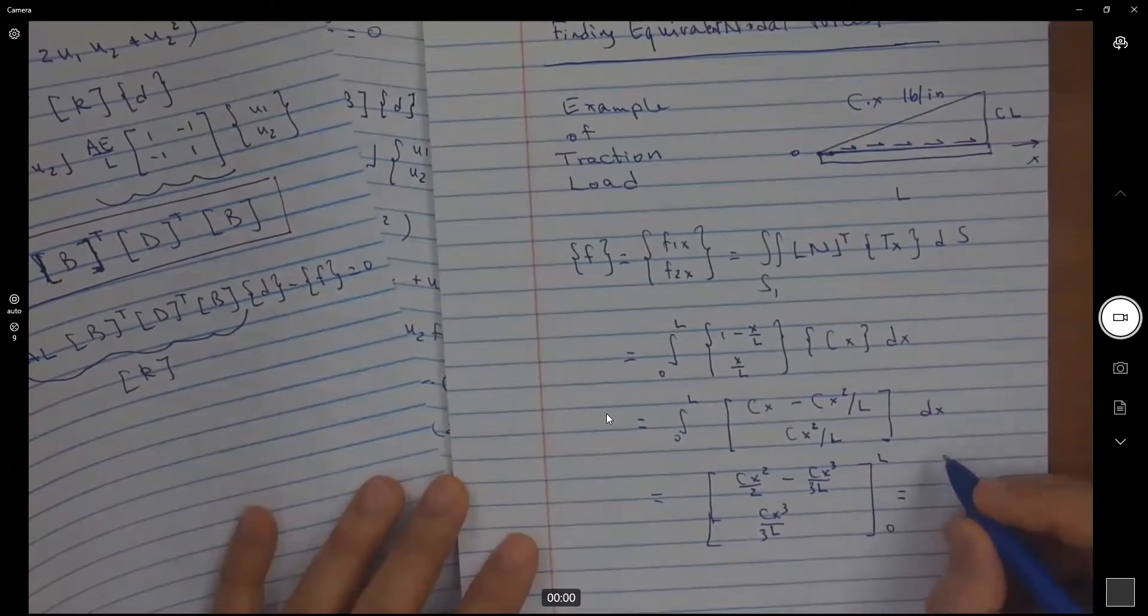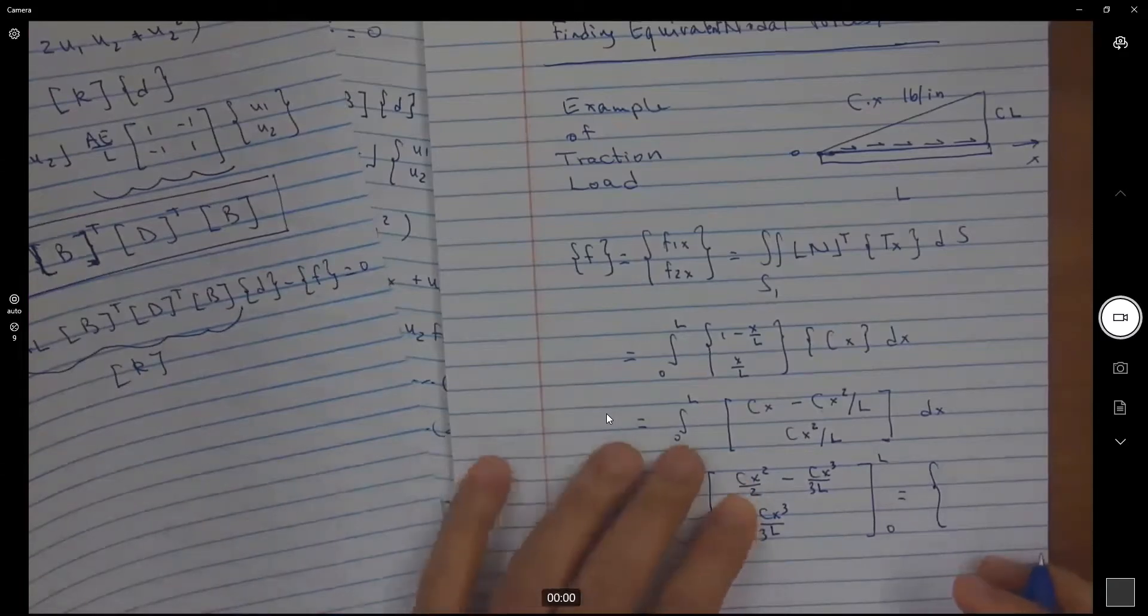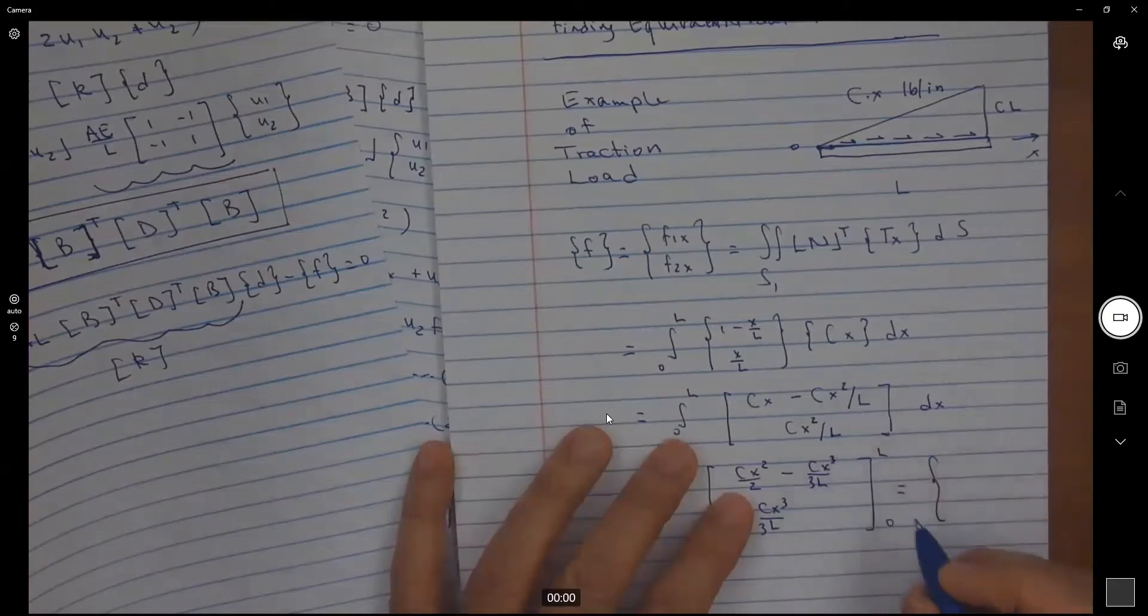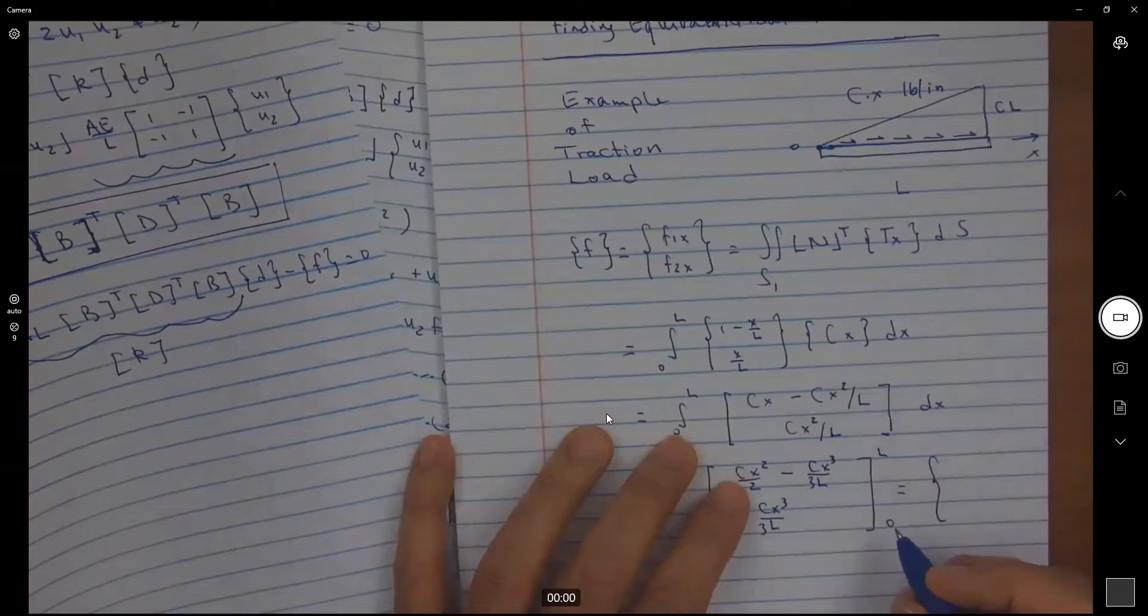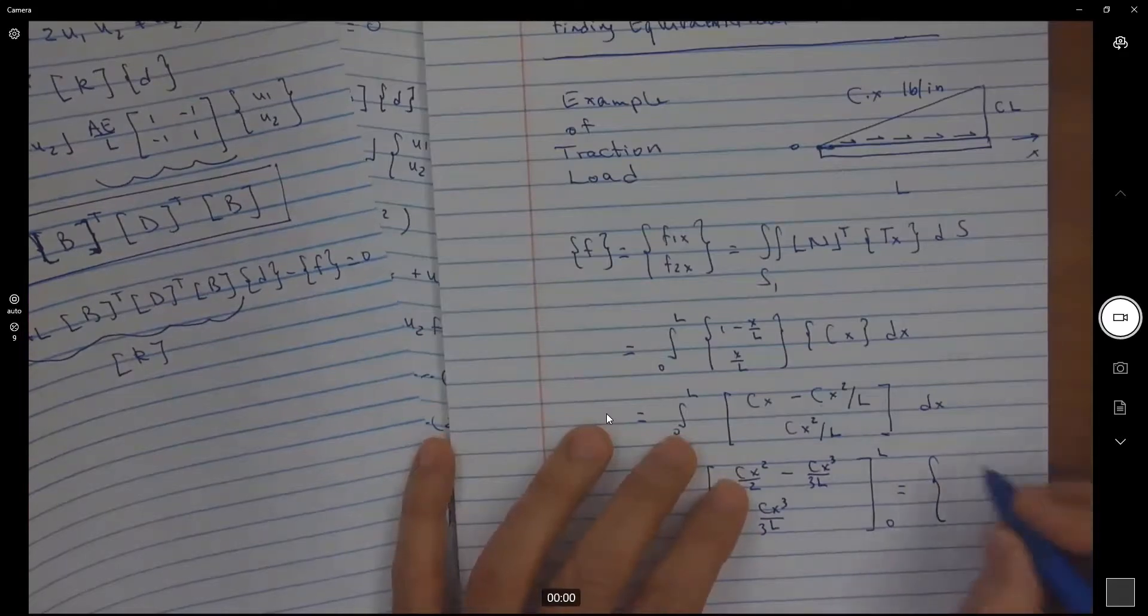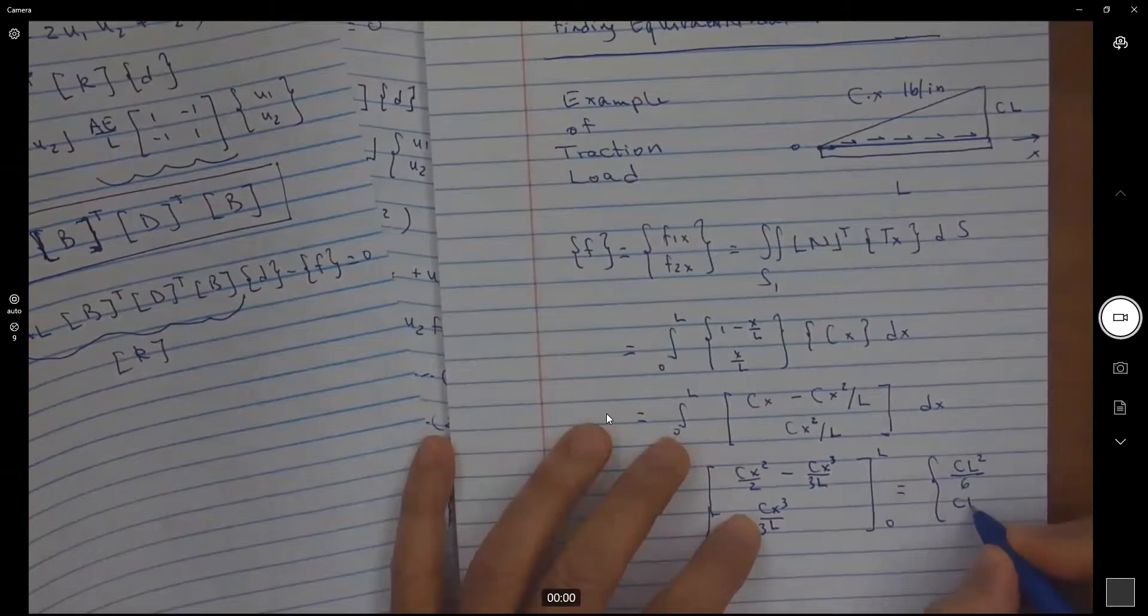When I evaluate that, cx squared over 2, and here we have cx cubed over 3L. So I get cx squared over 2 minus cx squared over 3, which gives me cL squared over 6. And here I'm going to get cL squared over 3.